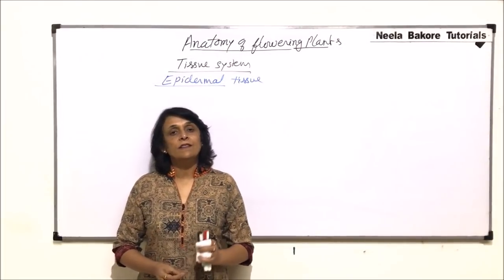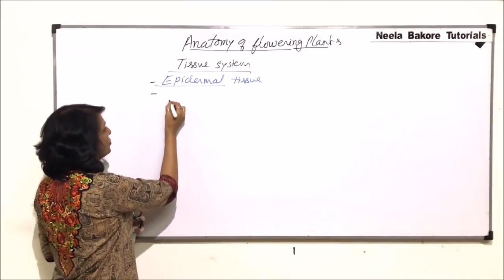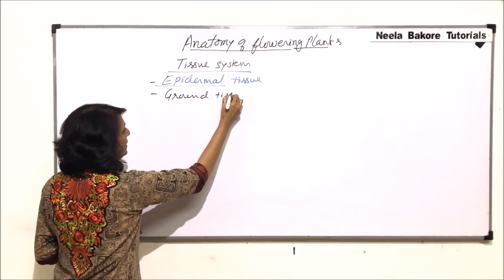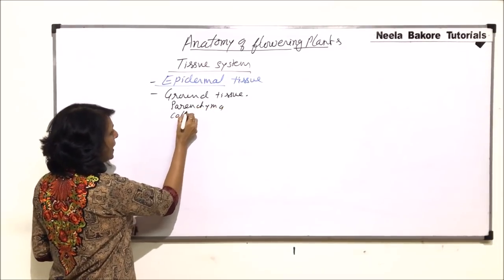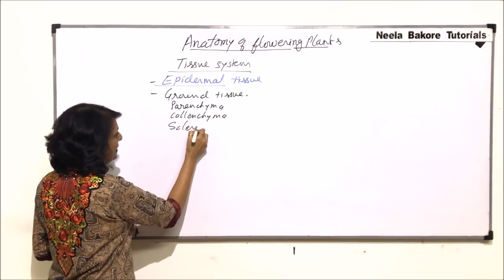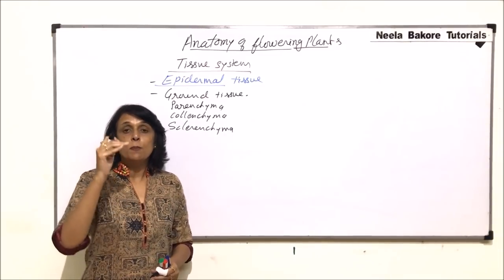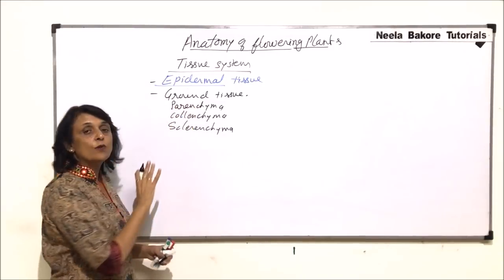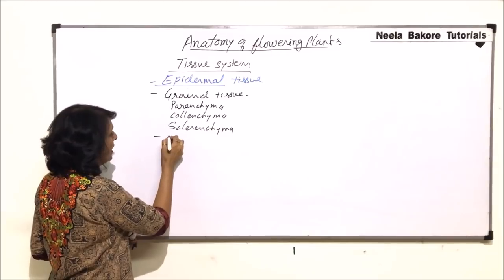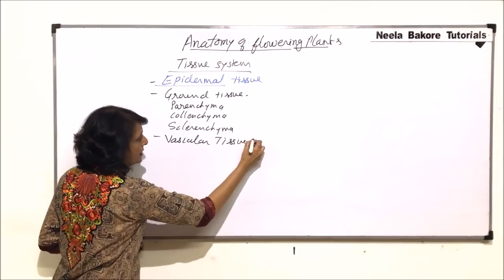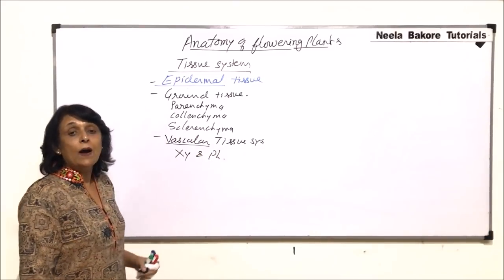In this part we'll be talking about the vascular tissue system. In the previous part we discussed the epidermal tissue system, and we also said that the ground tissue system basically comprises of parenchyma, collenchyma, and sclerenchyma. These are filling cells found wherever there is space between the epidermis and vascular tissue. The third system we will discuss in detail is the vascular tissue system, which comprises of xylem and phloem.